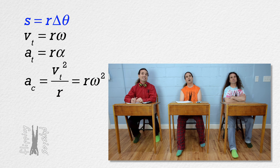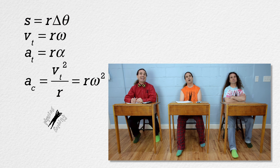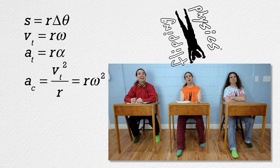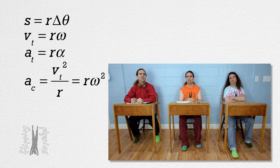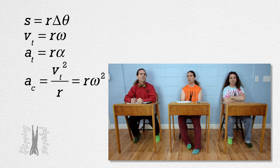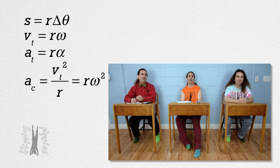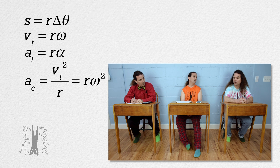Arc length equals radius times angular displacement. Are either of you going to read them? Sorry, it seemed like you were going to read them all. No, Mr. P clearly asked us to take turns reading them. Okay. Tangential velocity equals radius times angular velocity.